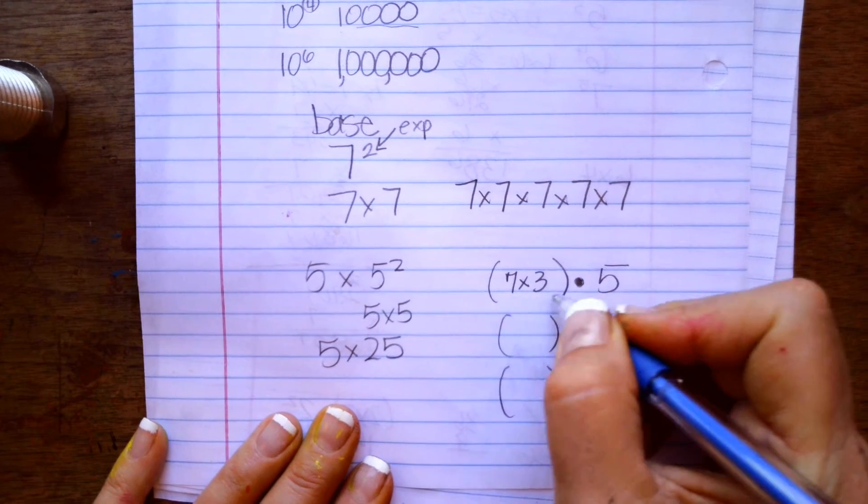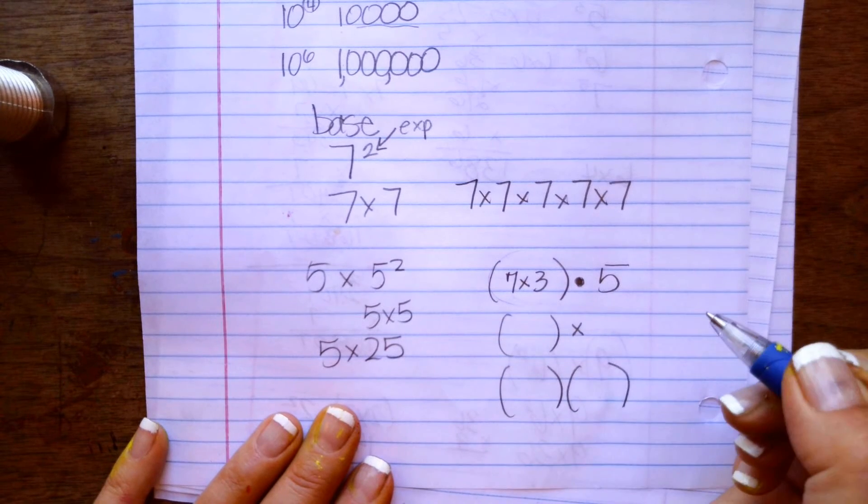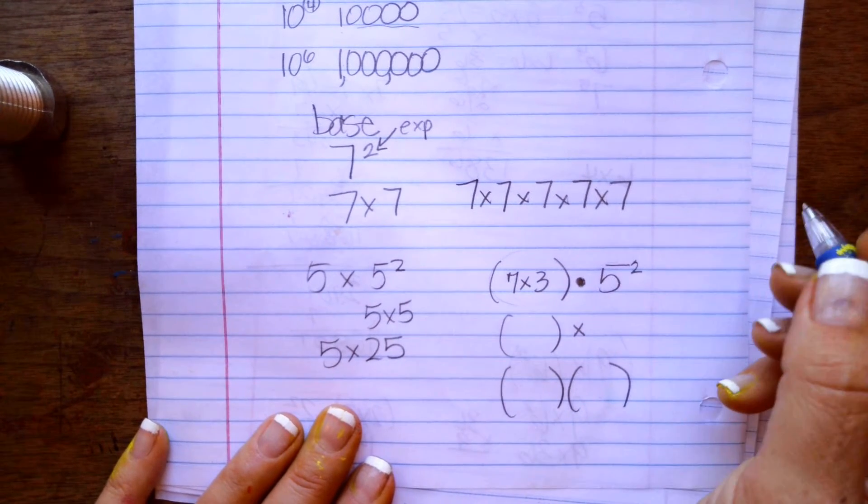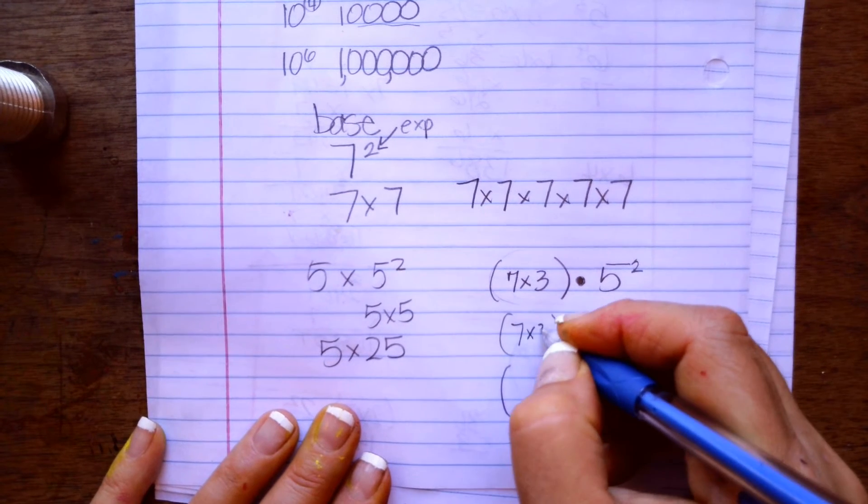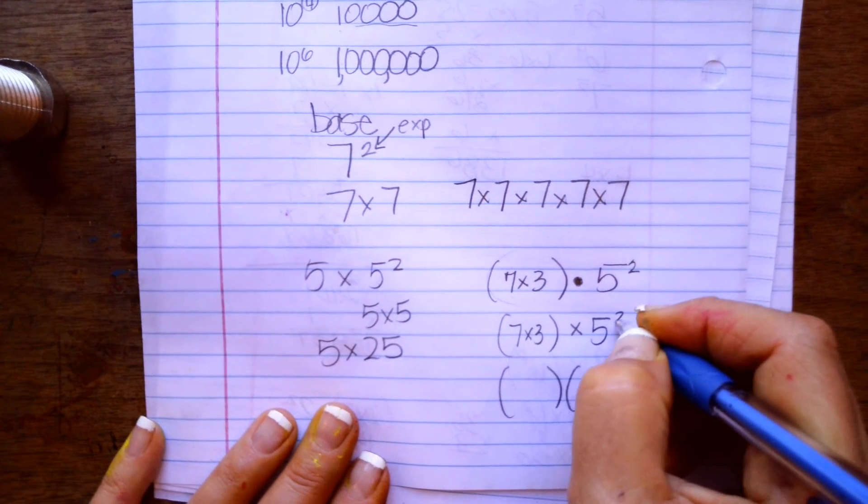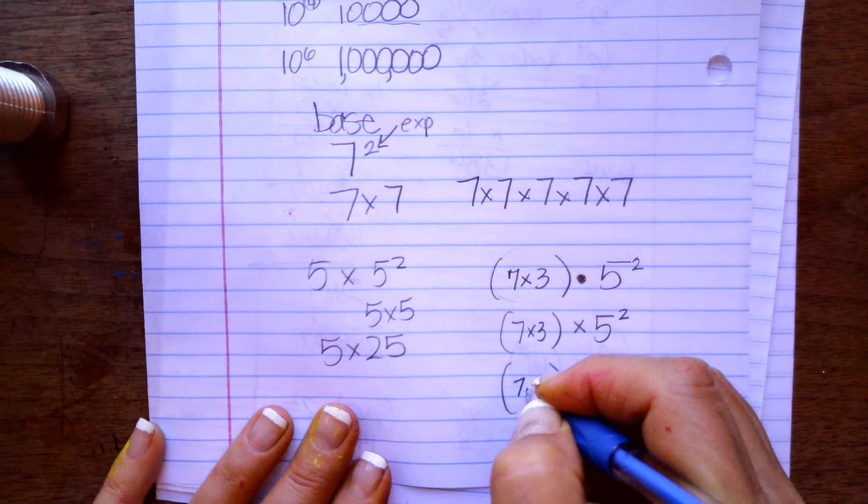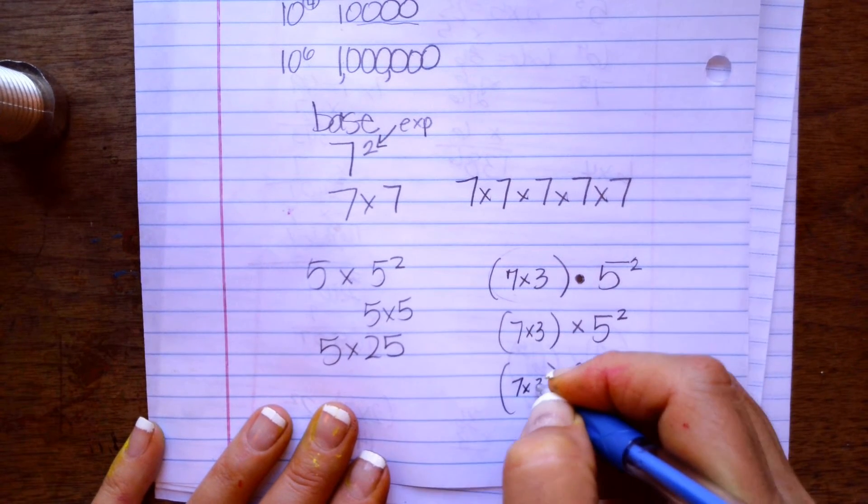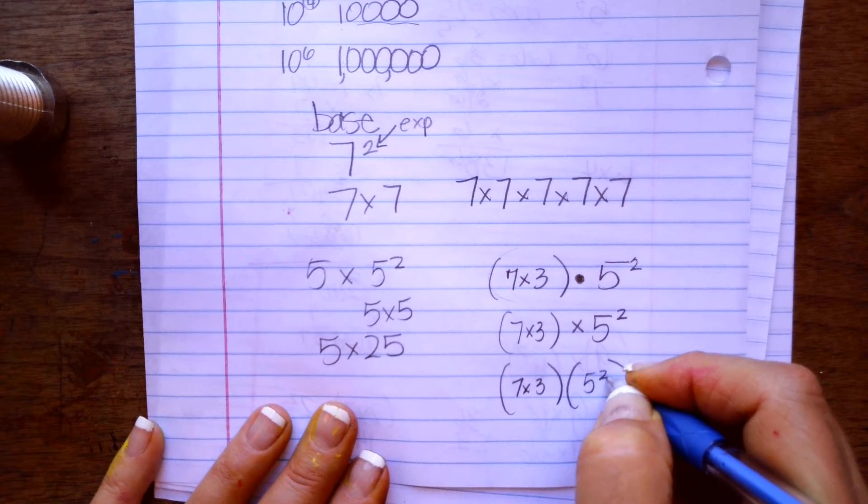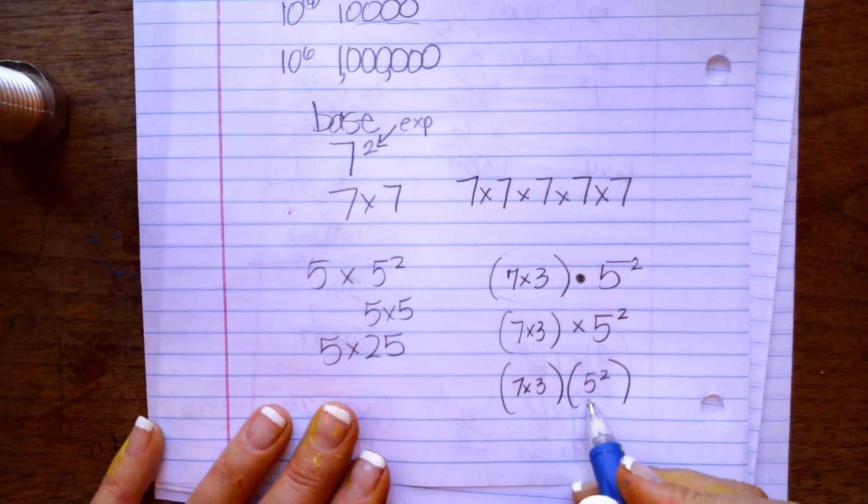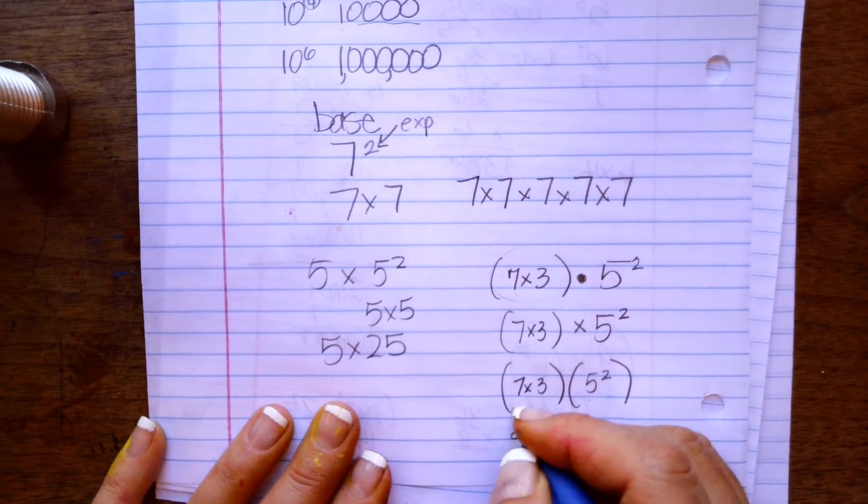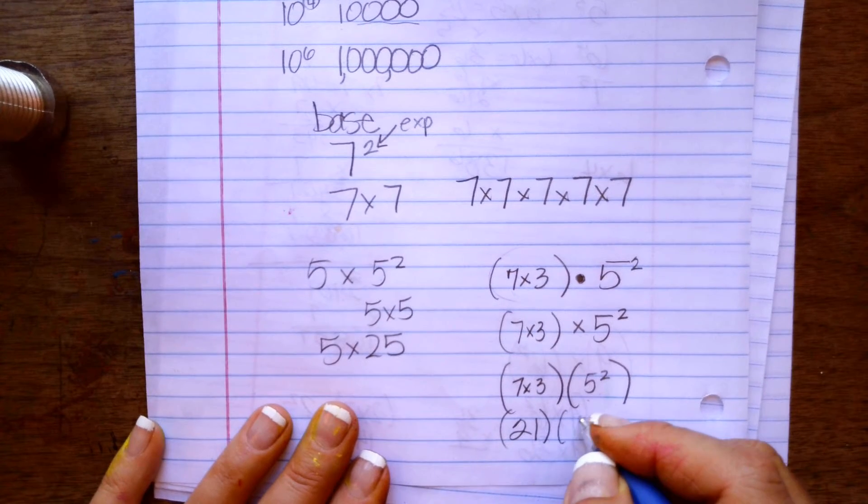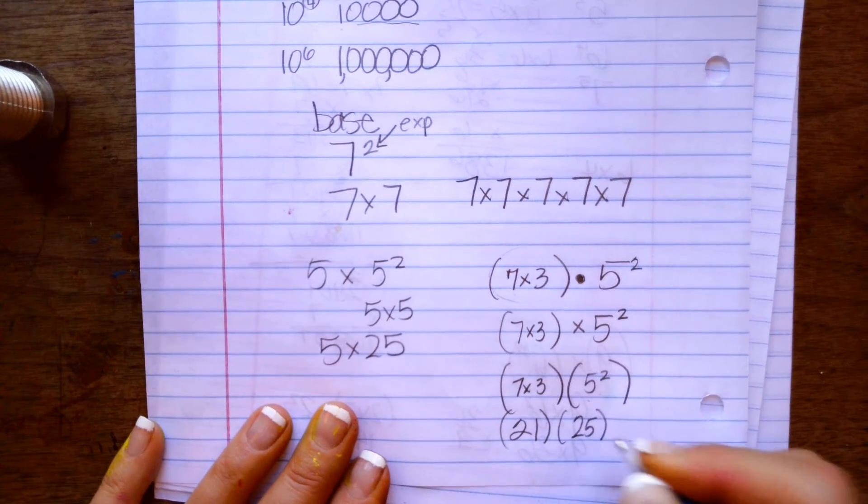So this could be 7 times 3. You would multiply this, and then you would multiply that by 5 squared, or whatever. It might also look like this with a multiplication sign. Or it could look like this. These two parentheses next to each other means you multiply this, which is 21, and then you multiply that times whatever 5 squared is, which is 25.